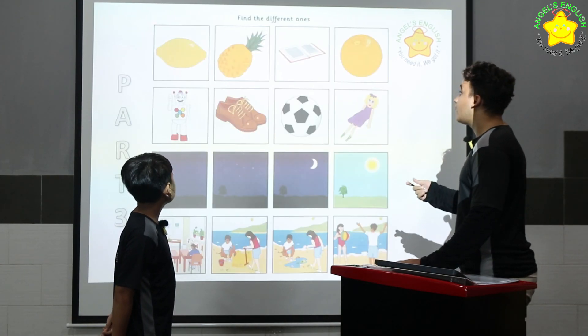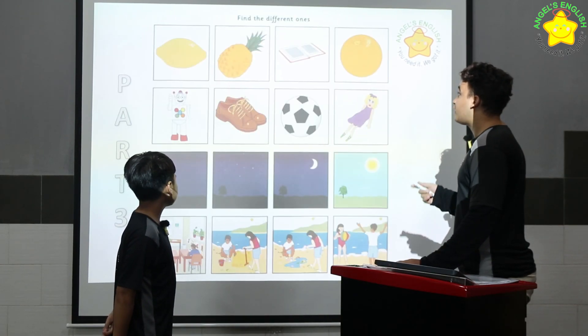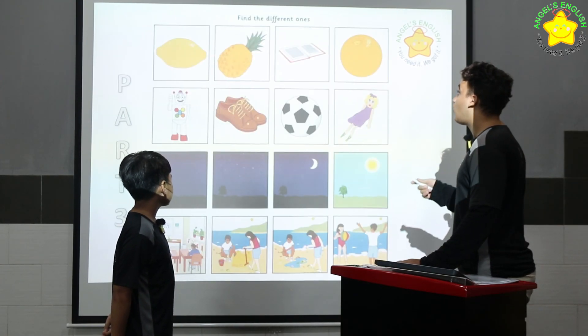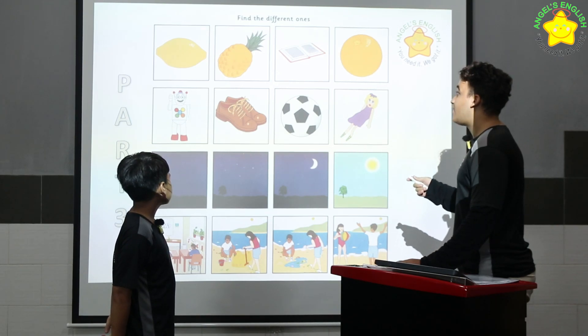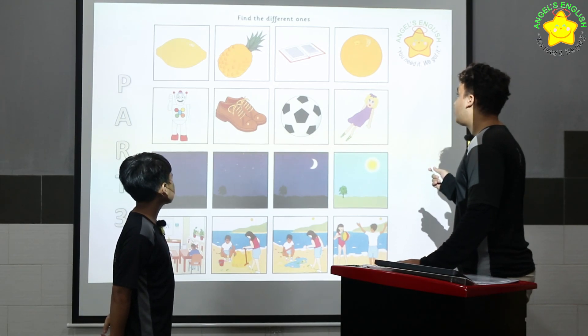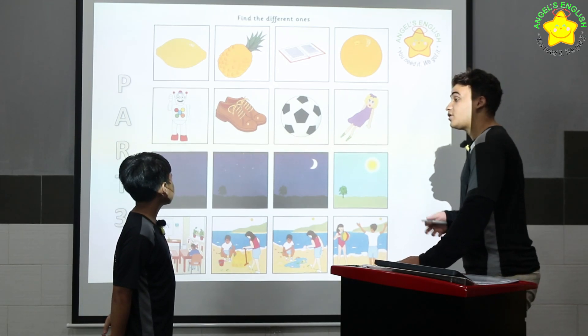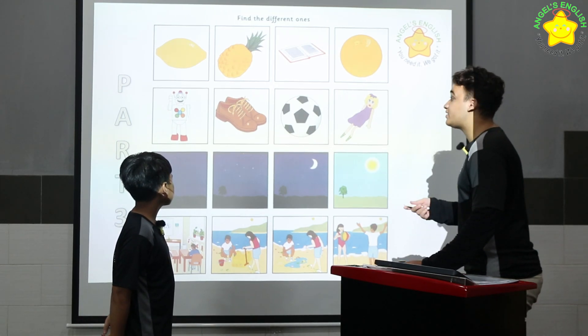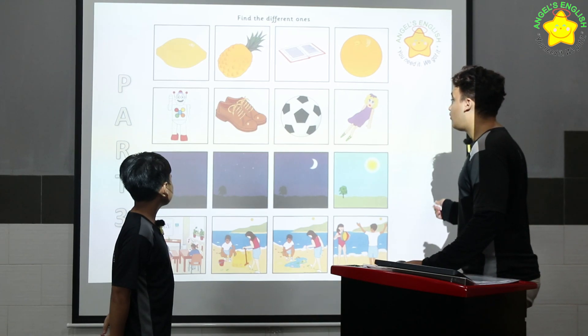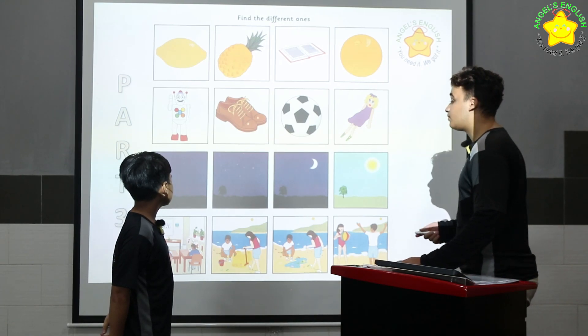All right, very good. All right, this is called Find the Different One. In row one, the book is different because the lemon, pineapple, and orange are all fruit. Please tell me two, three, and four.